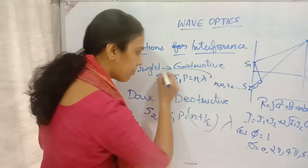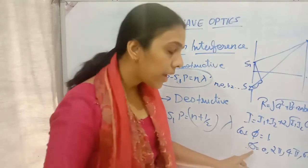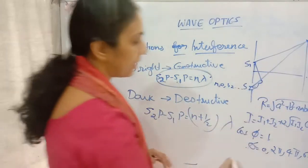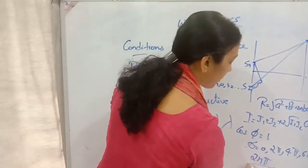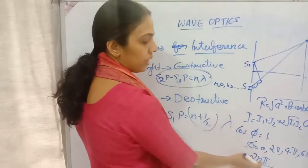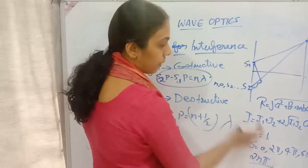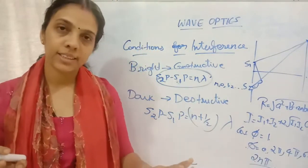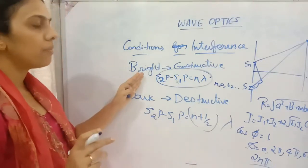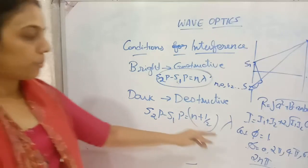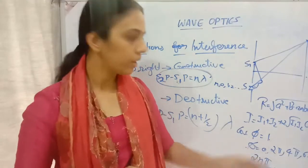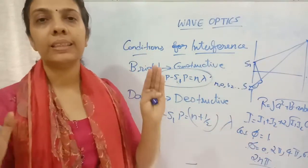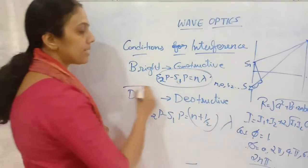So the conditions for constructive interference are: path difference equals nλ, and phase difference equals 2nπ. When φ = 0, there is no phase difference at all, and we get maximum brightness. For n = 0, φ = 0; n = 1, φ = 2π; n = 2, φ = 4π; n = 3, φ = 6π, and so on. These are the two conditions for constructive interference.